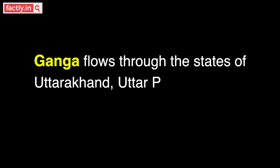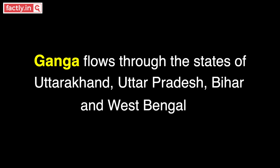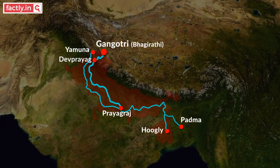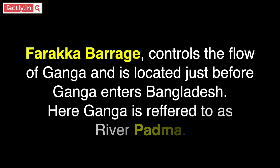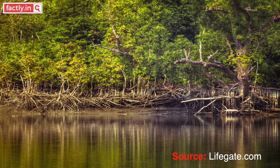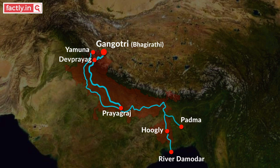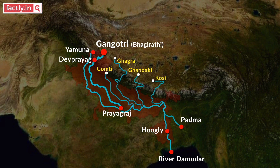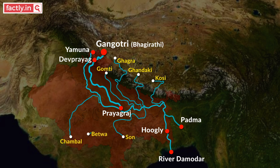Ganga flows through the states of Uttarakhand, Uttar Pradesh, Bihar, and West Bengal. In West Bengal, it forms a delta and creates a distributary called Hooghly, which further has a large tributary known as River Damodar. Farakka Barrage controls the flow of Ganga and is located just before Ganga enters Bangladesh, where it is referred to as River Padma. This is also the place for the world-renowned Sundarbans. Ganga has major tributaries on both the left and right banks. The rivers joining on the left bank originate in the Himalayas and include Gomti, Ghaghra (Ganga's largest tributary), Gandaki, and Kosi. Tributaries on the right bank originate in the Central Plateau; Son is a prominent right-bank tributary, while Chambal and Betwa — also originating in Central India — are tributaries of River Yamuna.